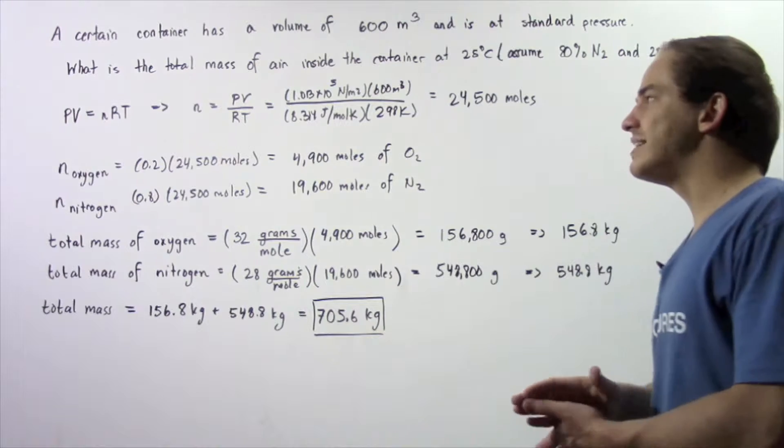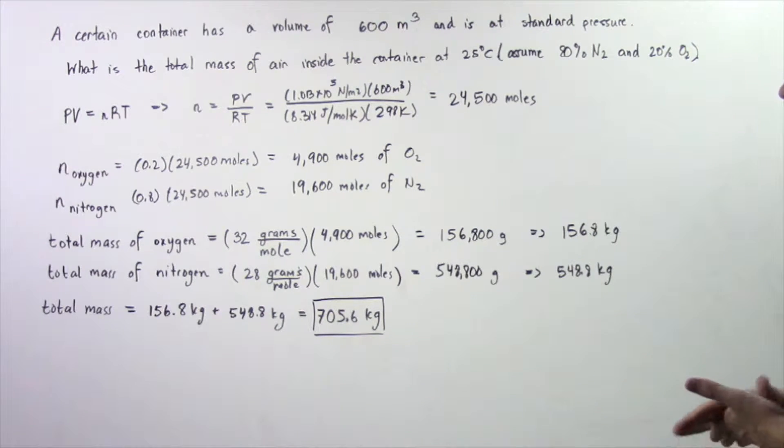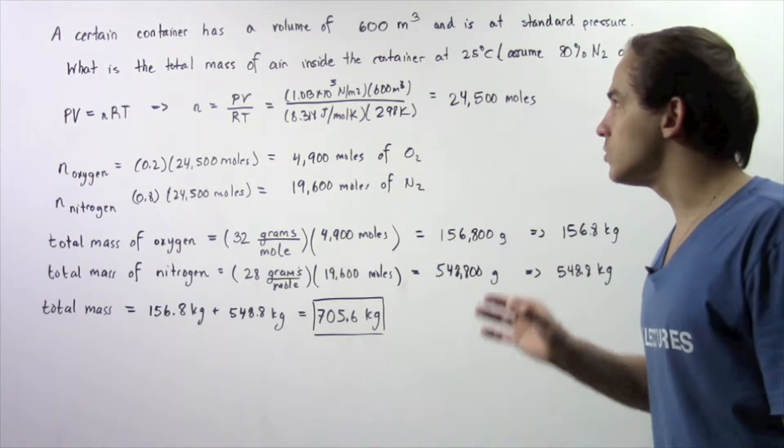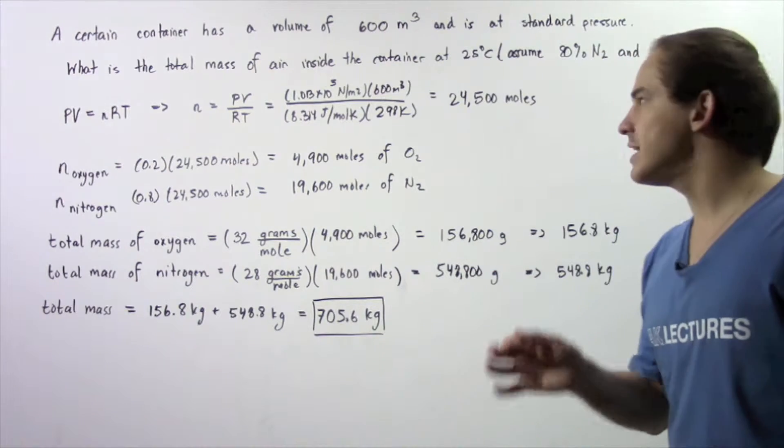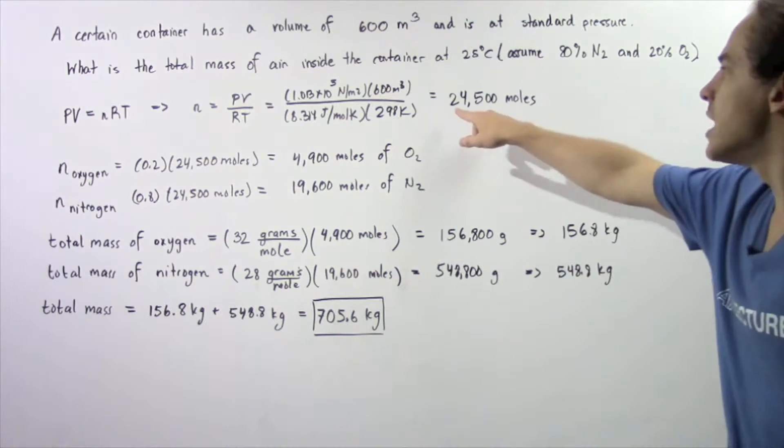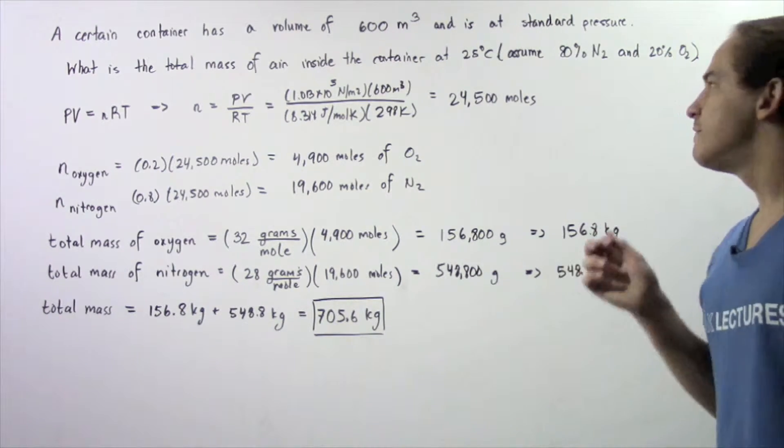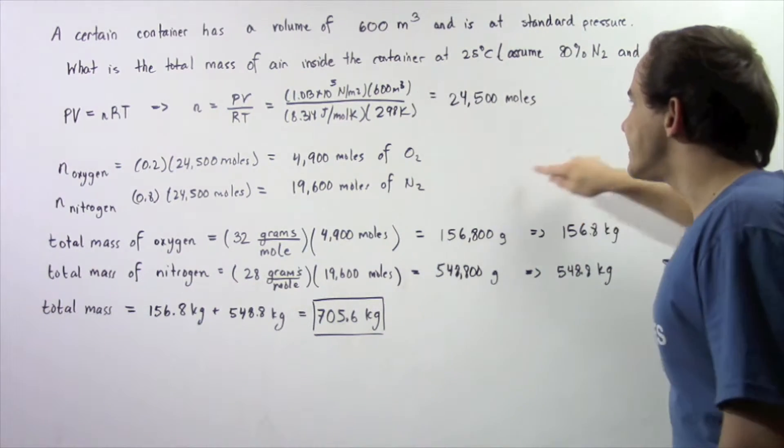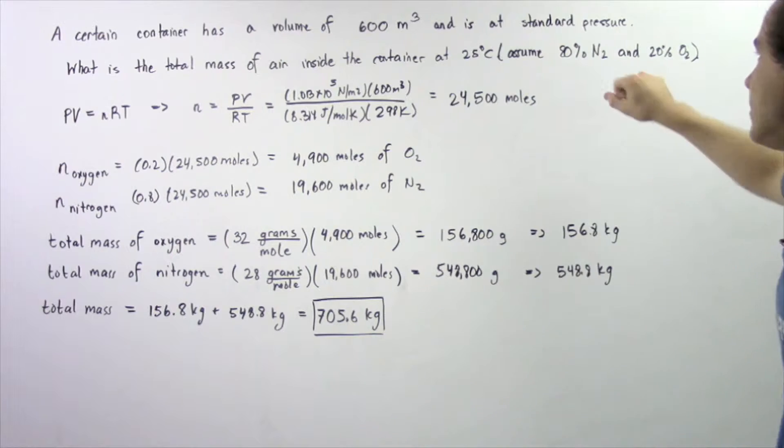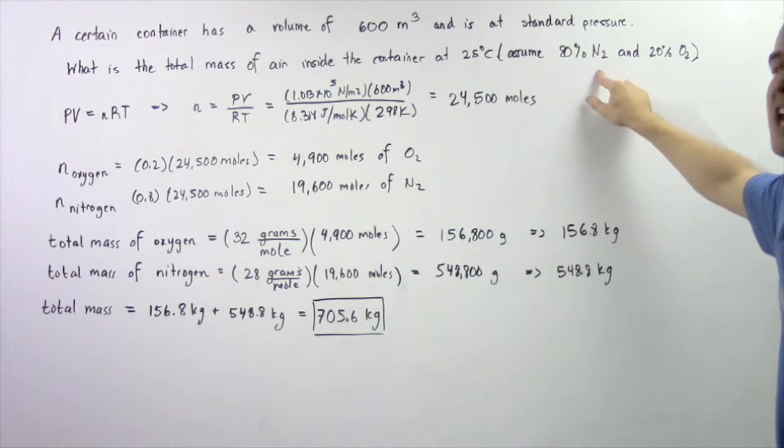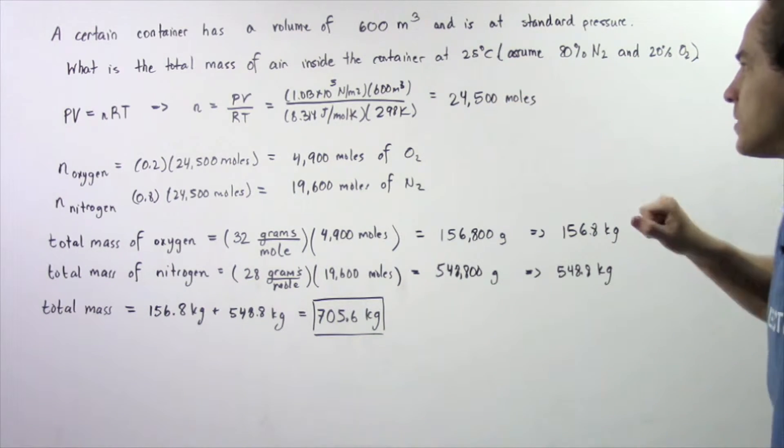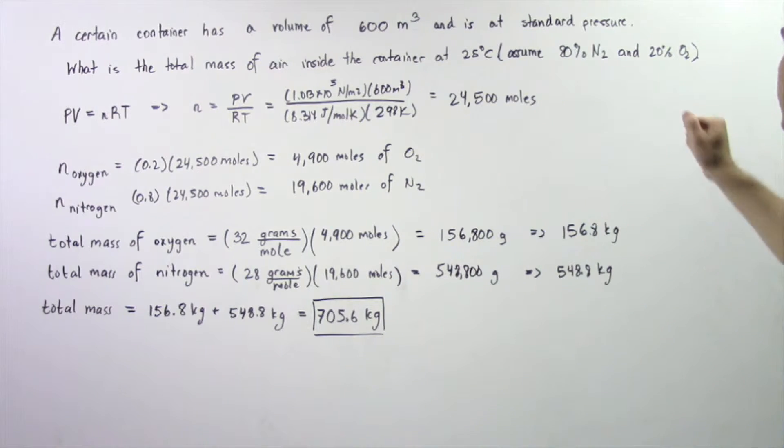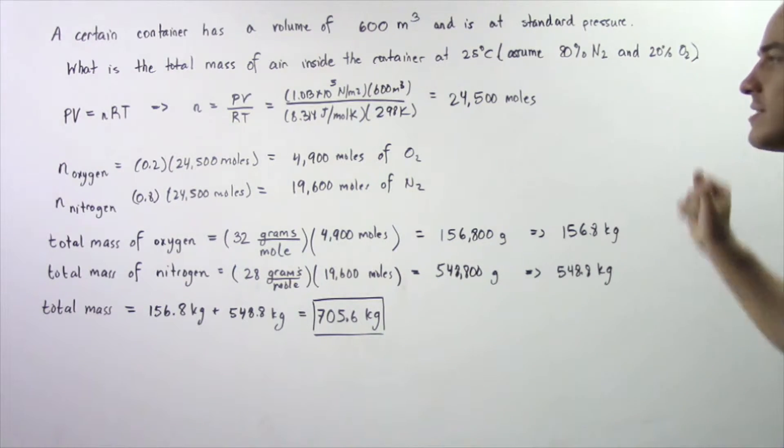So we plug the values into our calculator, and we get that the number of moles inside our container is approximately equal to 24,500 moles. So we know that 80% of this number is equal to the number of moles of nitrogen.